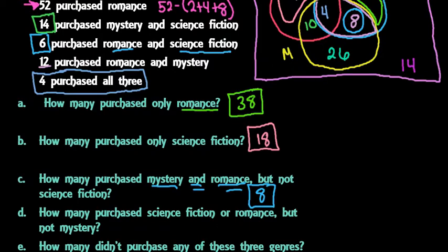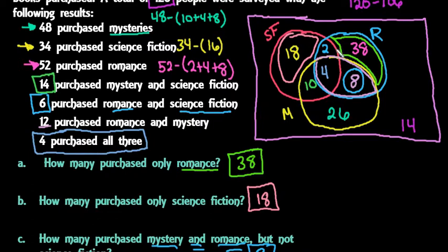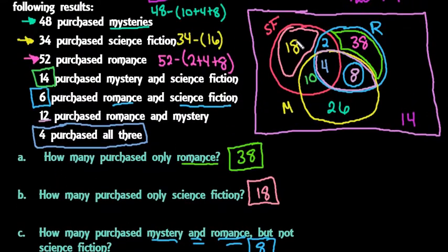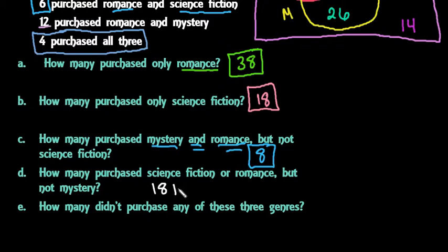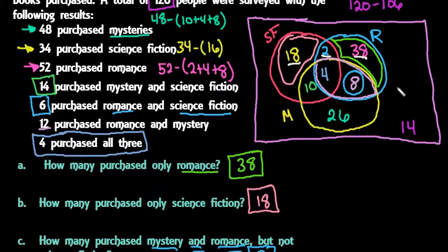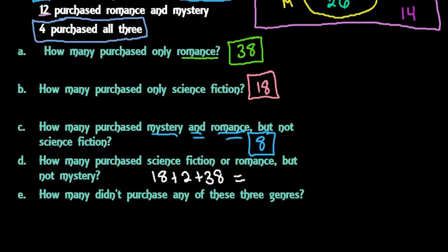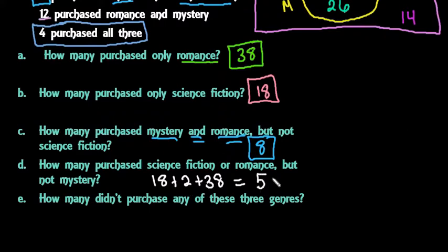How many purchased science fiction or romance? Remember, science fiction or romance means inside this circle or this circle. We don't want the mystery portion. So we take 18 plus 2 plus 38 — the parts inside science fiction or romance that are not overlapped with mystery. That gives a total of 58.